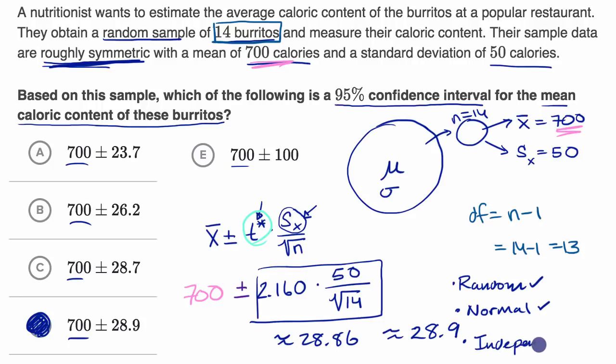And then the last condition is the independence condition. And here, if we aren't sampling with replacement, and it doesn't look like we are, if we're not sampling with replacement, this has to be less than 10% of the population of burritos. And we're assuming that there's going to be more than 140 burritos that the universe, that the population, that this popular restaurant makes. So I think we can meet the independence condition as well. So assuming that you feel good about constructing a confidence interval, this is the one that you would actually construct.